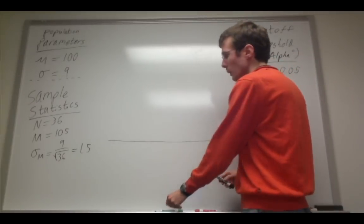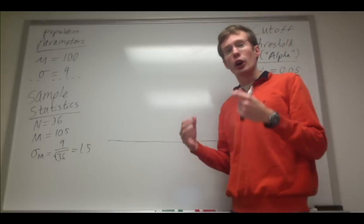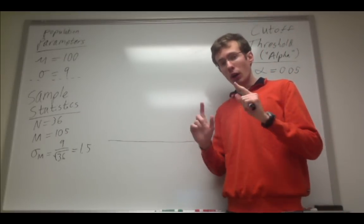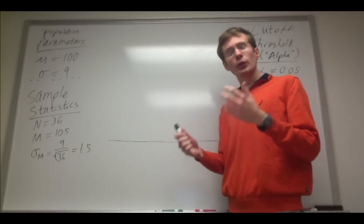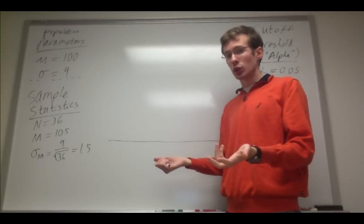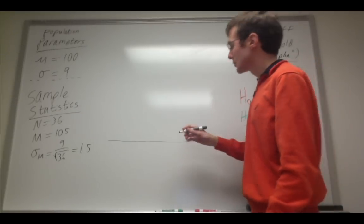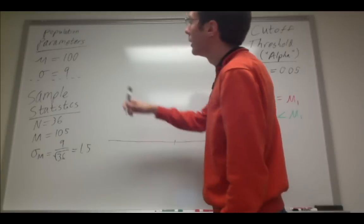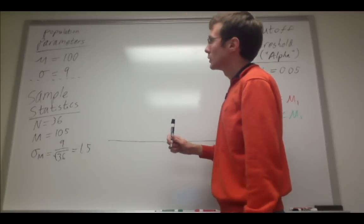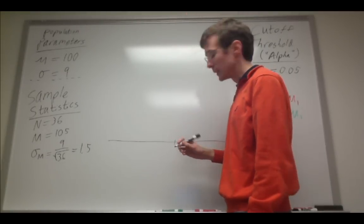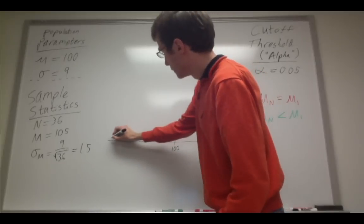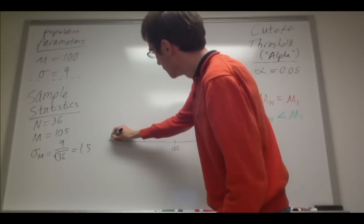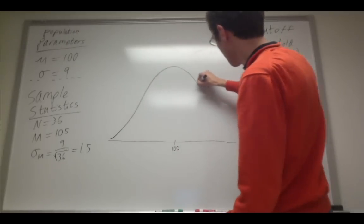Our second step is we want to determine the characteristics of our comparison distribution. All the comparison distribution is is a specification of what the null distribution should look like. So in this case, for the population, let's say the mean IQ is 100 points. And I'm going to just draw a normal-looking curve right here.